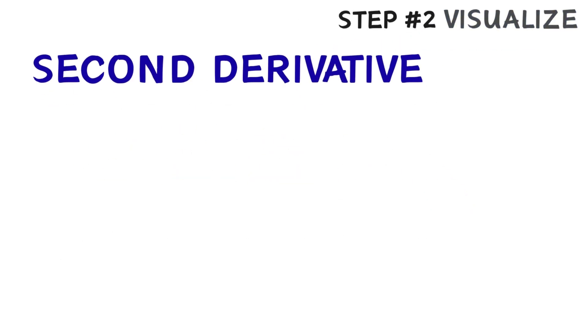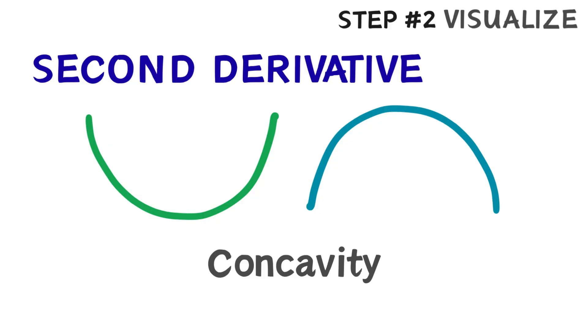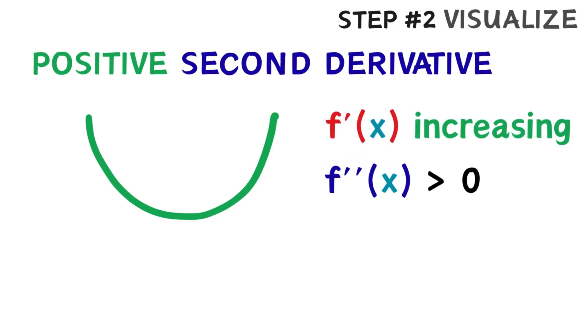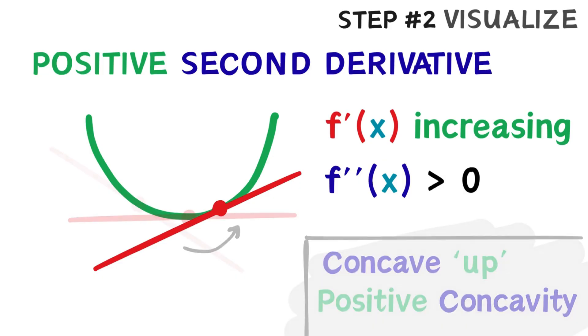The second derivative controls the curvature, or concavity, of a graph. A positive second derivative tells us that the graph bends upward, because that means the derivative, or the slope, is increasing. We call this graph concave up, or that it has a positive concavity.